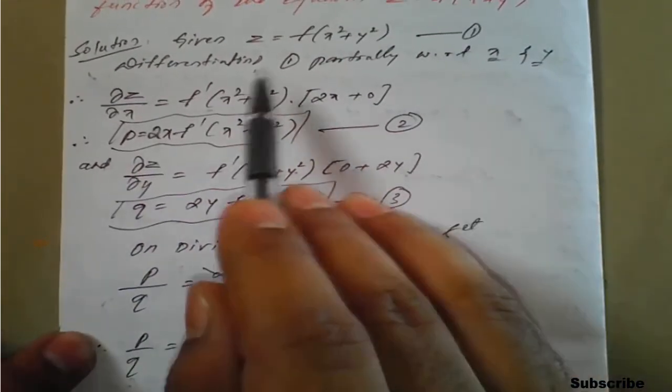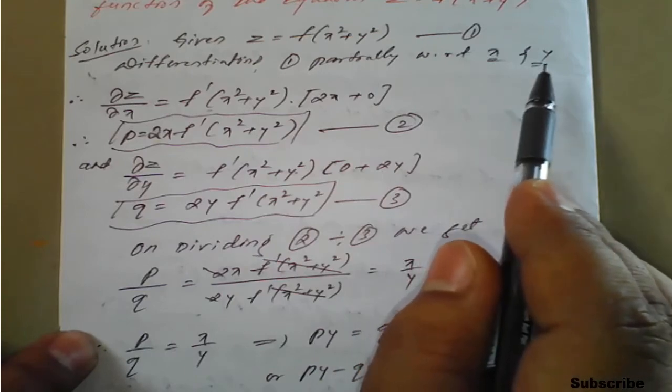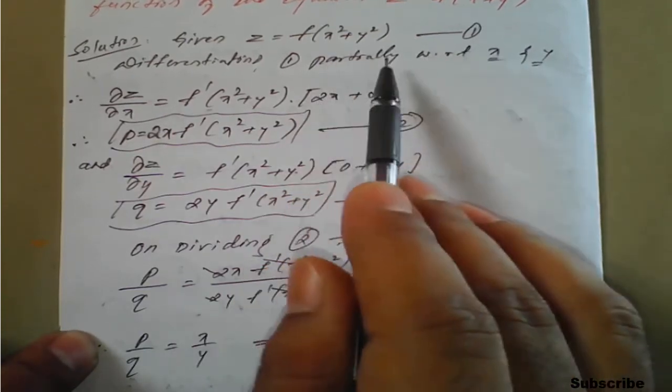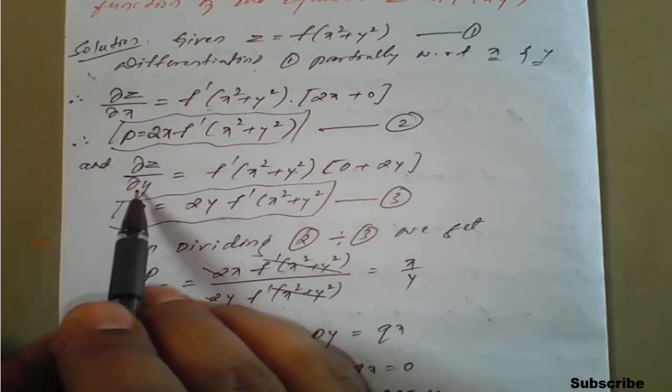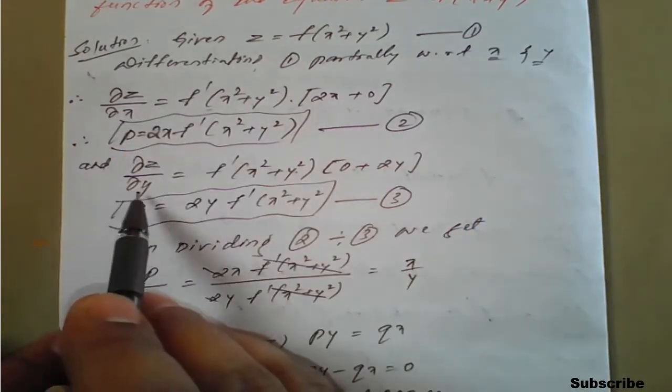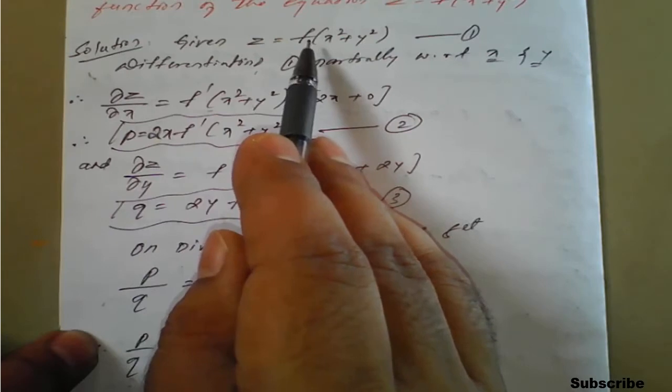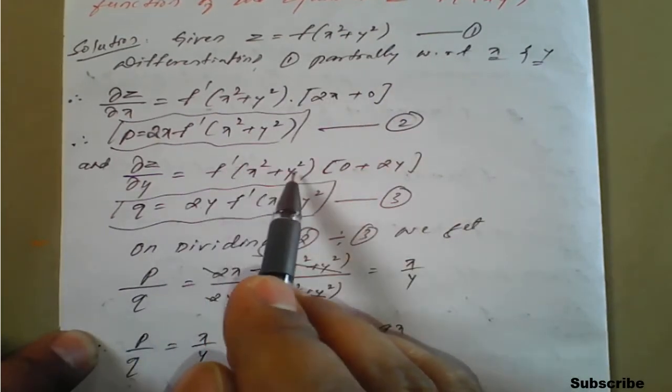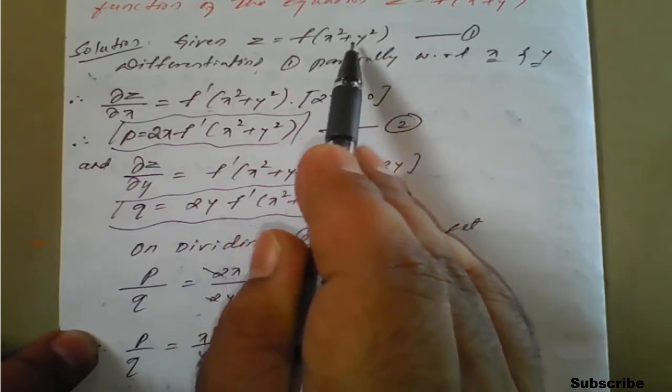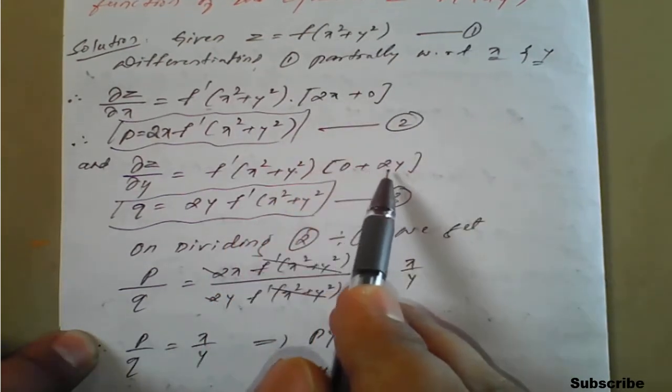Next, according to the differentiation, now we have to go for equation 1 supposed to be differentiate partially with respect to y also. Therefore ∂z/∂y. This will become ∂z/∂y equals f of x square plus y square will be f dash of x square plus y square into partial derivative of the bracket x square plus y square will be 0 plus 2y.